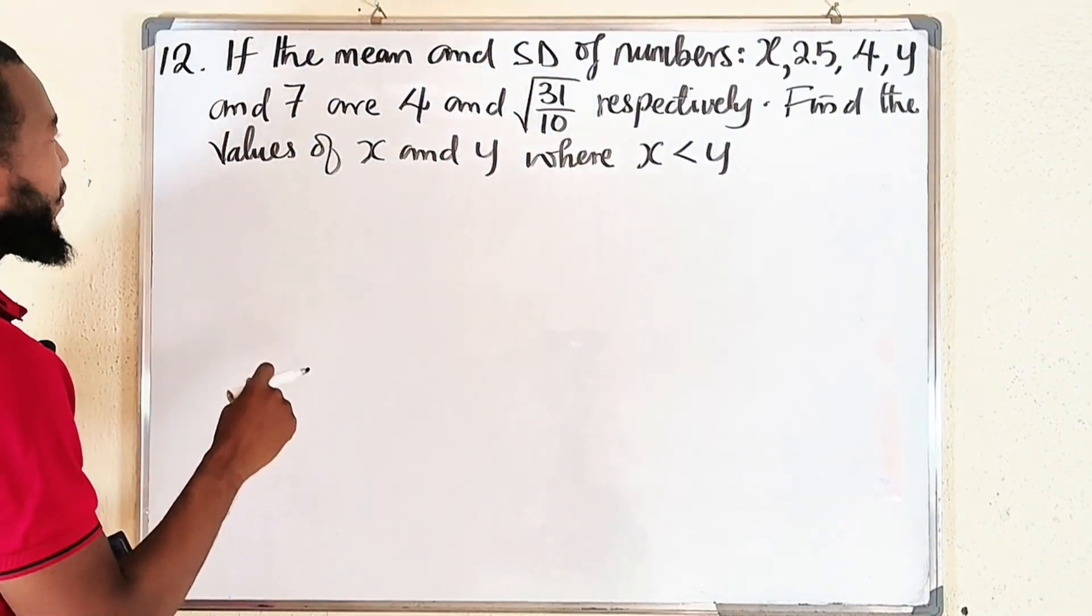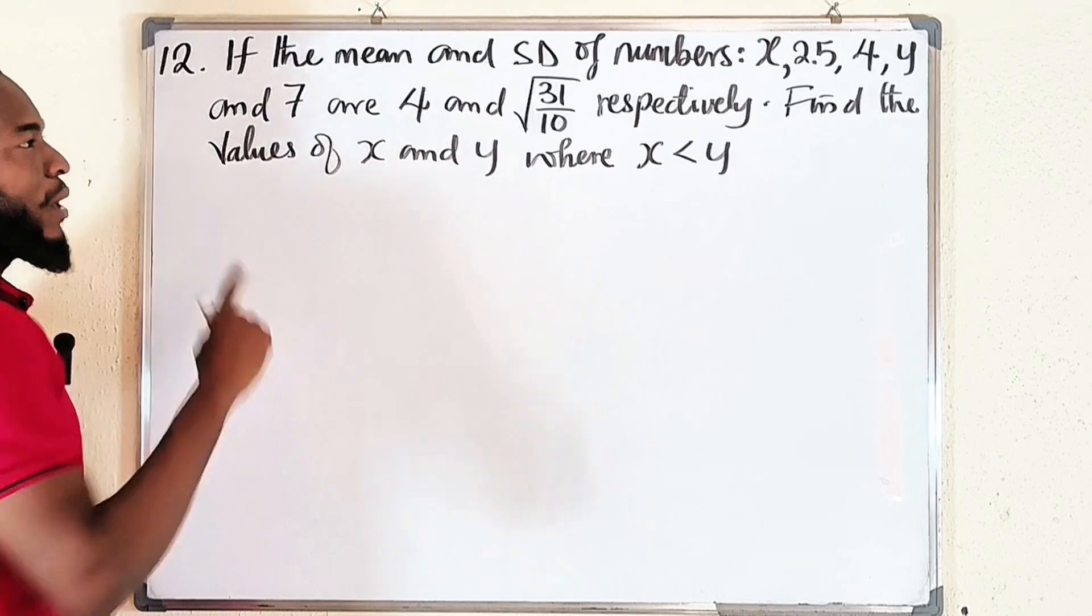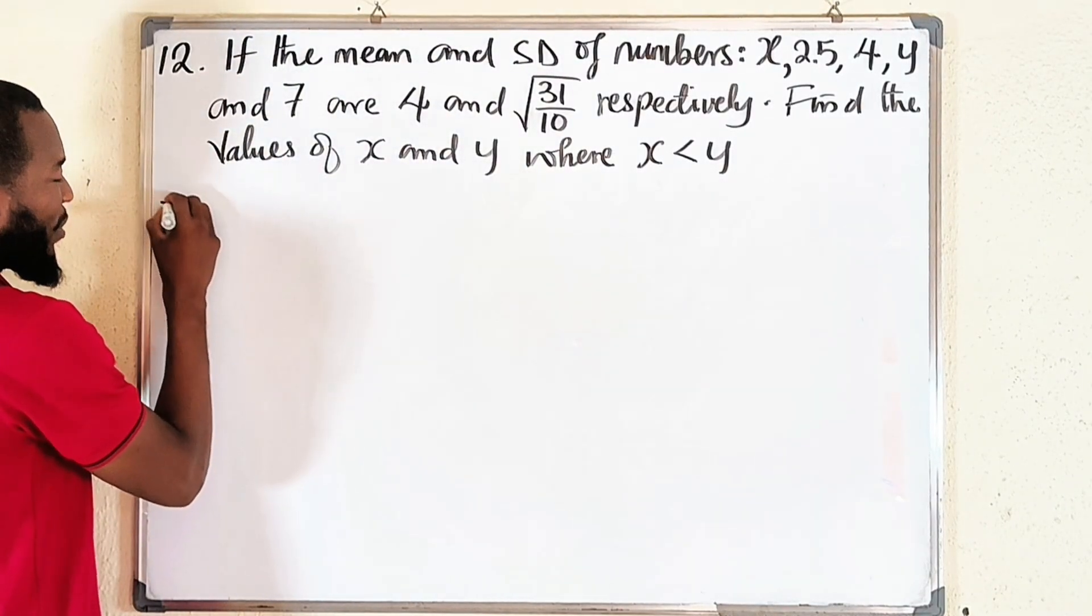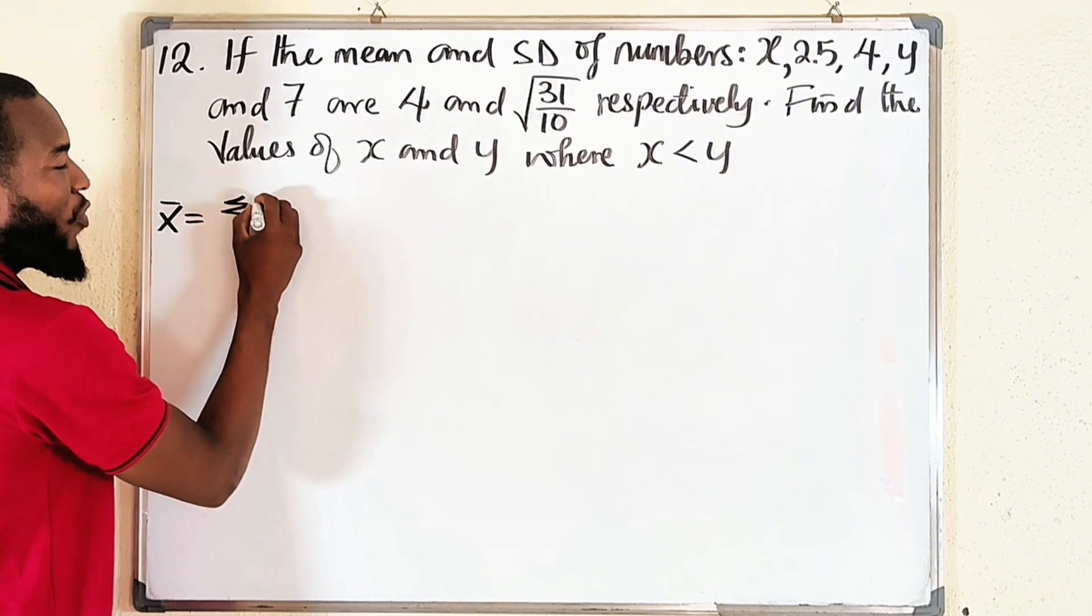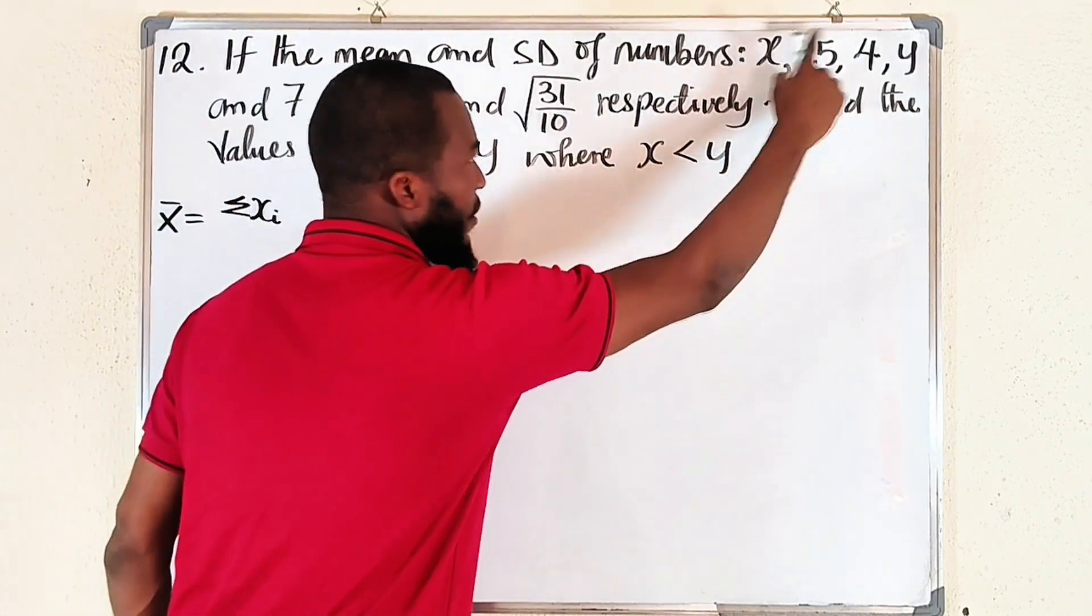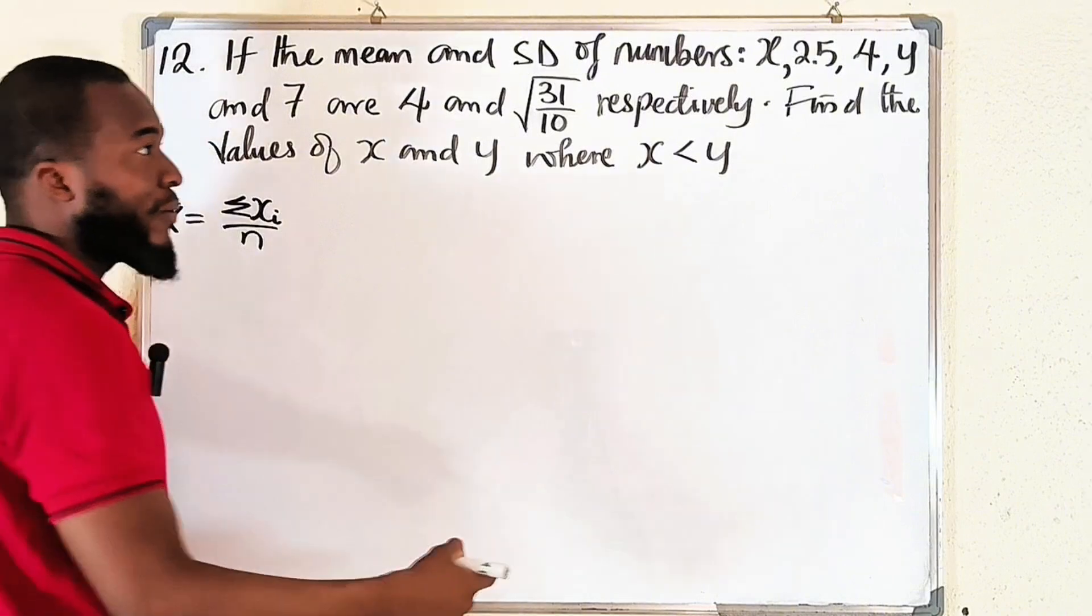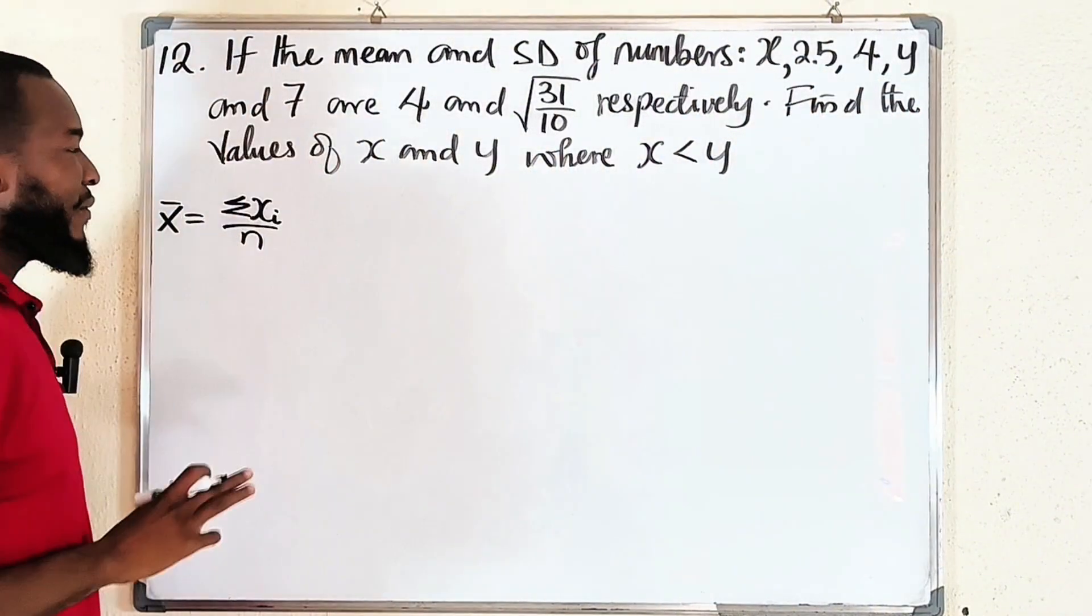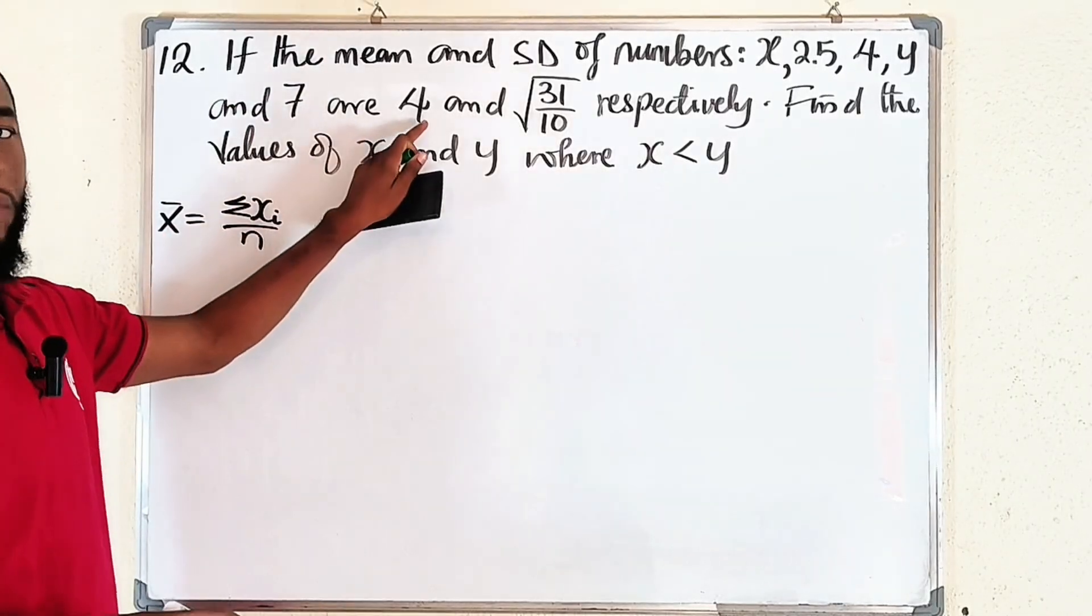If the mean and the standard deviation of numbers x, 2.5, 4, y, and 7 are 4 and the square root of 31 divided by 10 respectively, we are asked to find the values of x and y given that x is less than y. What you should remember is the formulas. The formula for calculating the mean is x bar equal to the summation of all the x_i's, meaning x1, x2, x3, divided by n. n stands for the number of items we have: 1, 2, 3, 4, and 5.